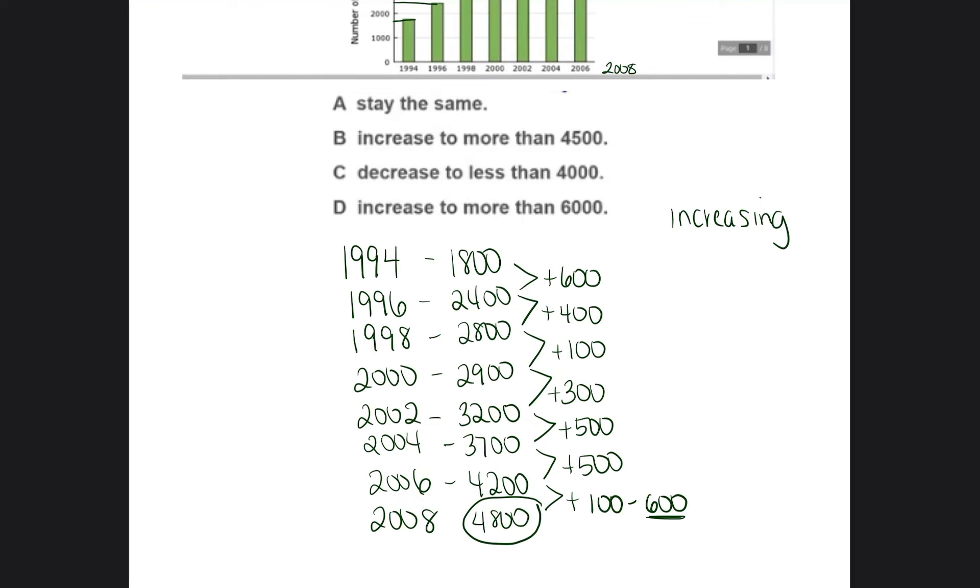And let's see if any of these answers support that. So it says in 2008, will it stay the same? No, because none of these bars, none of these years have stayed the same. They have all been increasing. So then what else can we eliminate? We can also eliminate C because each year they have been increasing. Not a single bar has been decreasing. So we know that our answer is not going to be decreasing.